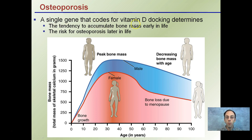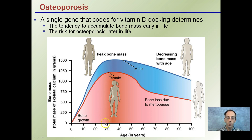A single gene that encodes for vitamin D docking determines the tendency to accumulate bone mass early in life and the risk for osteoporosis later in life. Looking at a graph of age versus bone mass (measured in total skeleton calcium in grams), we see a dramatic increase at a young age for both males and females. Peak bone mass occurs around ages 25 to 30 for both sexes, but males peak at a higher rate. After about age 40, bone mass decreases for both, and after menopause for females there is a dramatic rapid decrease.